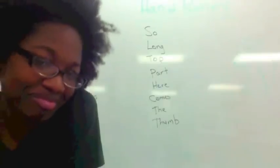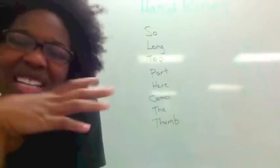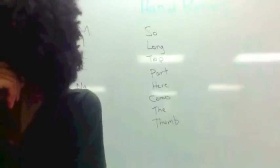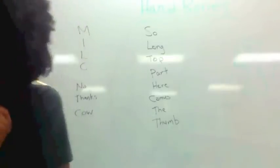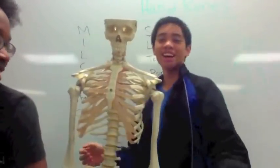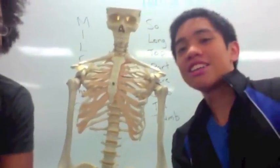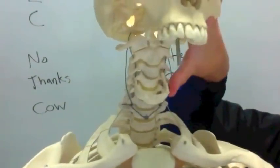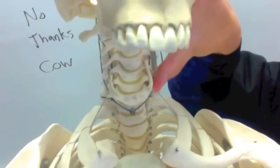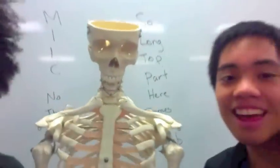We have the hyoid bone, which is on the neck and is separate from all the other bones. This right here on the skeleton is the hyoid bone. And that is it — this is lab four for you. Good luck.